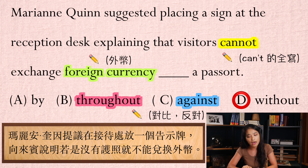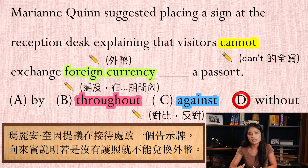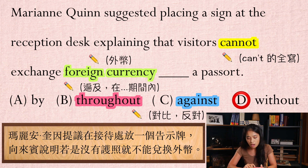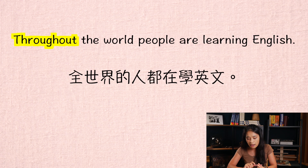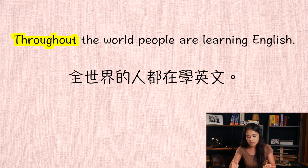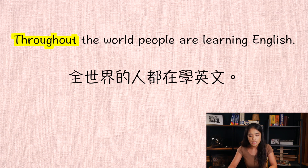那選項B的throughout就比較特別啦。Throughout也是介系詞,有「遍及」或者是「在什麼期間內」的意思。我們舉個例子說明:Throughout the world, people are learning English——全世界的人都在學英文,所以很明顯就是「遍及」的意思。